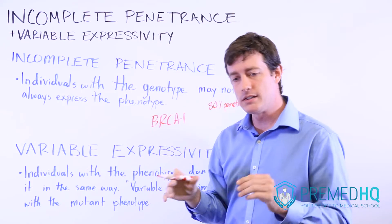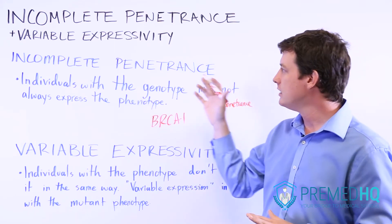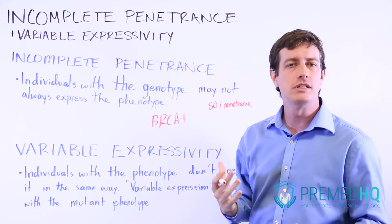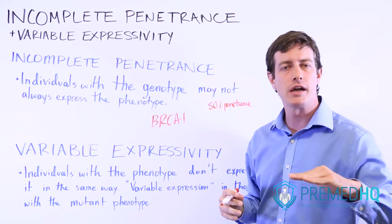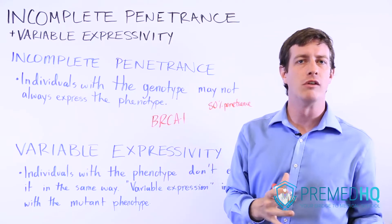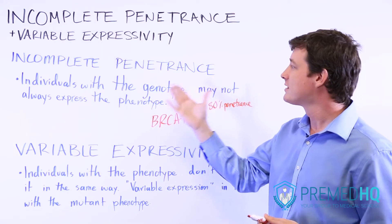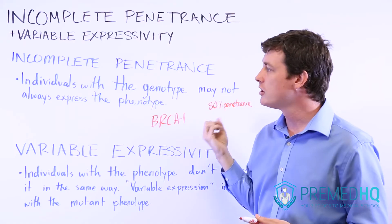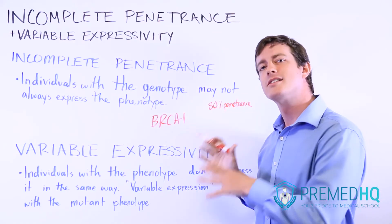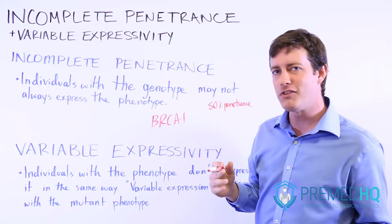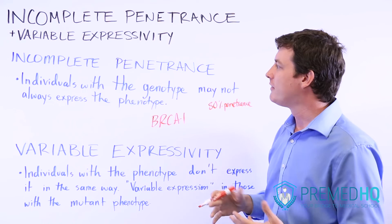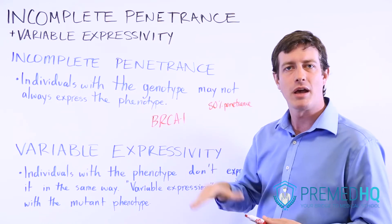Incomplete penetrance means you have the genotype that has been known to express a phenotype, but there's a decent chance it will not be expressed, or it might not be expressed during a 30-year or 40-year span. Penetrance makes genetic analyses a lot harder, because if everyone who has that genotype doesn't express that phenotype, it becomes much more complex to figure out how the heredity pattern has gone.